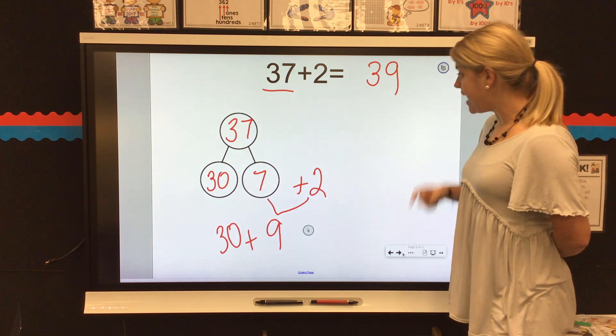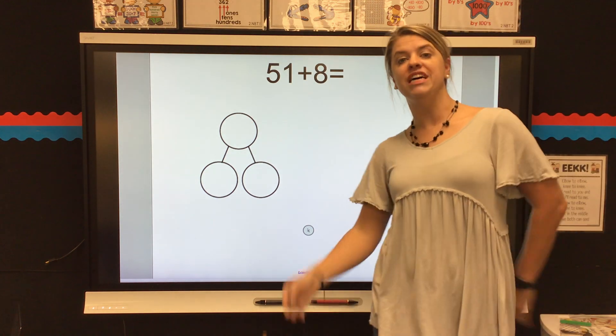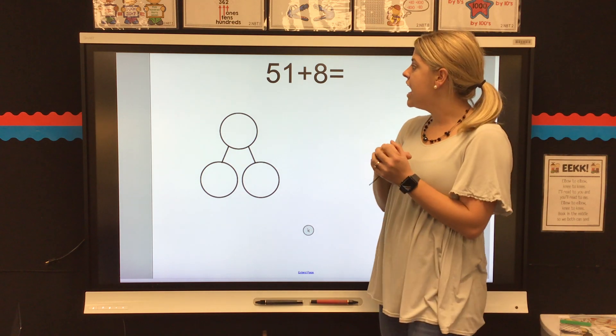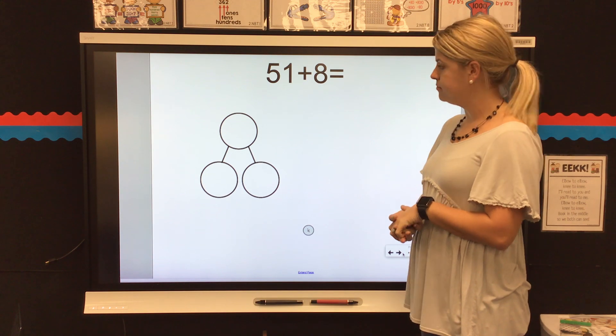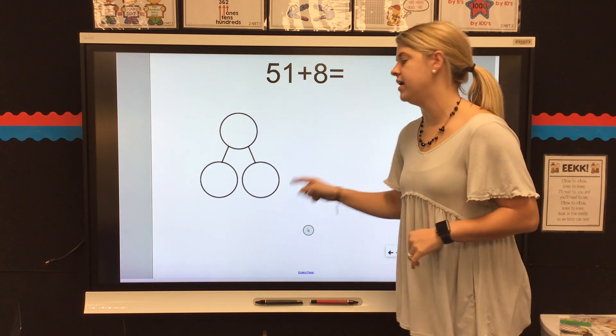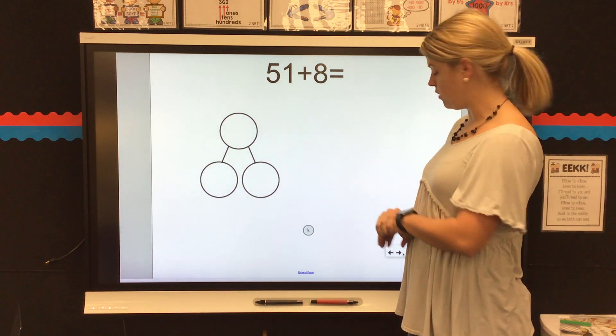All right, if you have a whiteboard handy, I'm going to let you try this one. 51 plus 8. I want you to try the problem 51 plus 8. You can draw yourself a number bond, break it down, and see what the number equals.